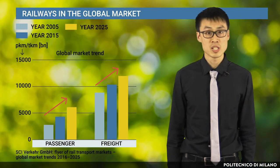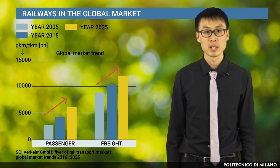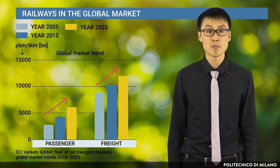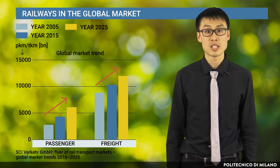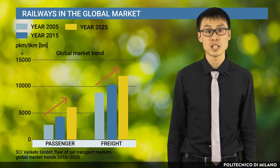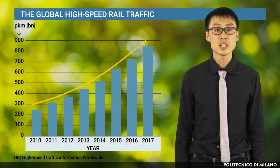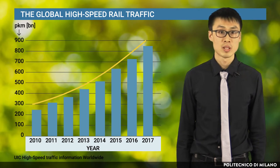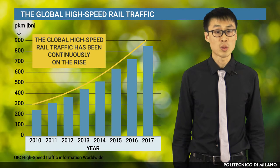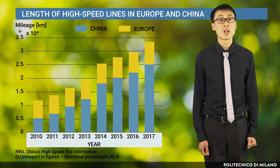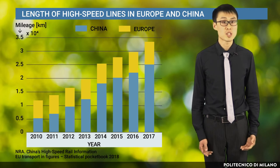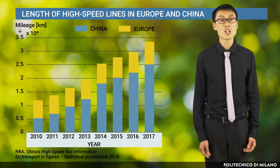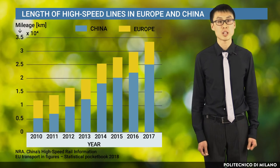Thanks to those advantages, the need for railways in the global market keeps increasing. An analysis performed by SCI multi-client studies shows that the increasing range of both passenger and freight services are expected to last until 2025, and possibly beyond this date. It is worth mentioning that the development of high-speed rails over the past decade is very impressive. The global high-speed rail traffic has been continuously on the rise. Moreover, the total length of high-speed lines in Europe and China has been significantly expanded. Especially in China, the length of high-speed lines in operation has increased by a factor of 4 in 8 years.